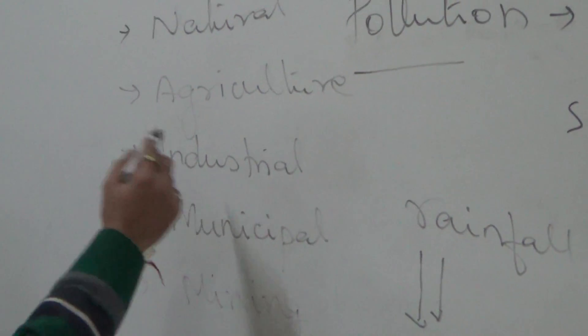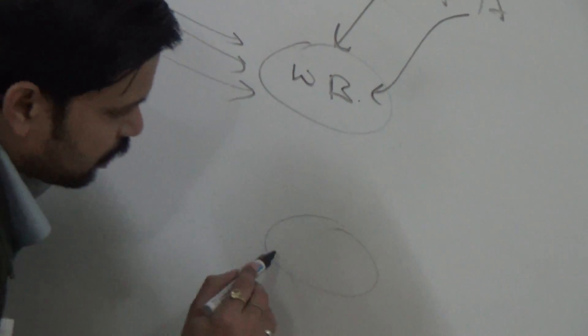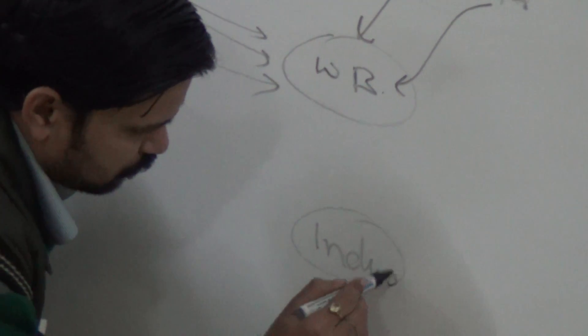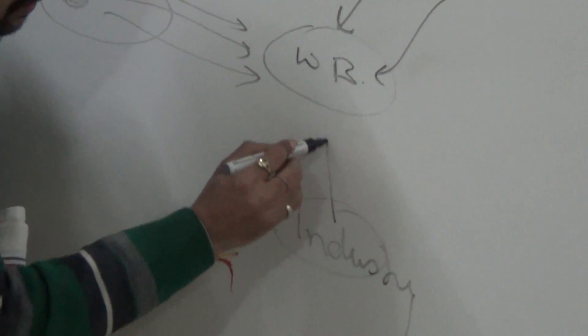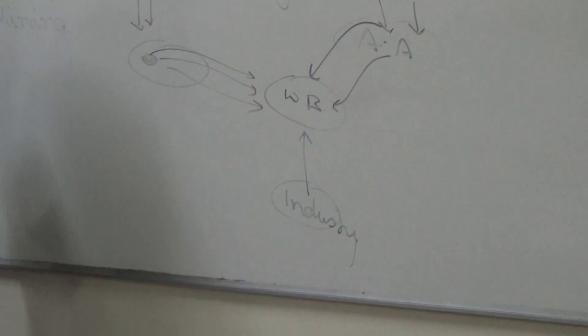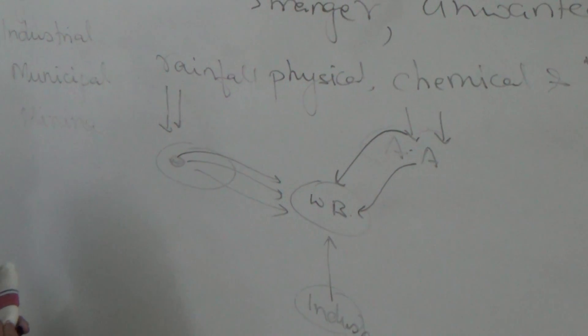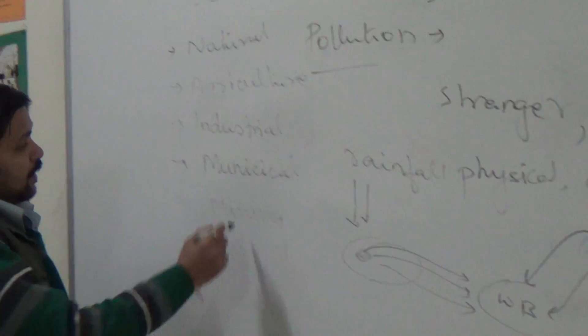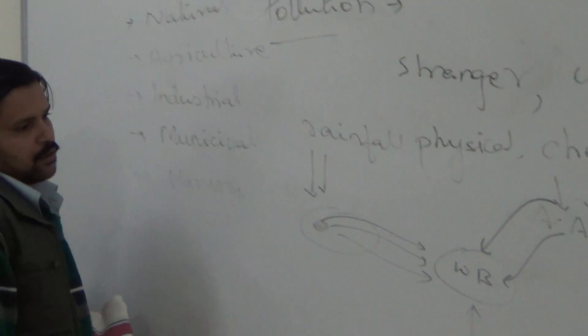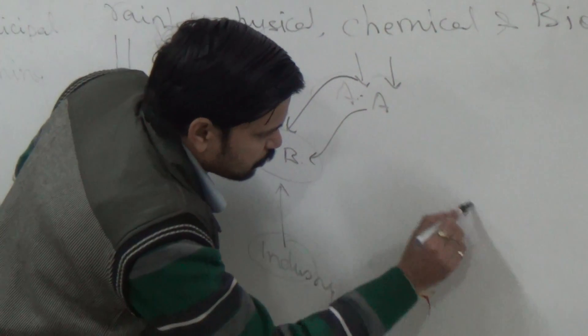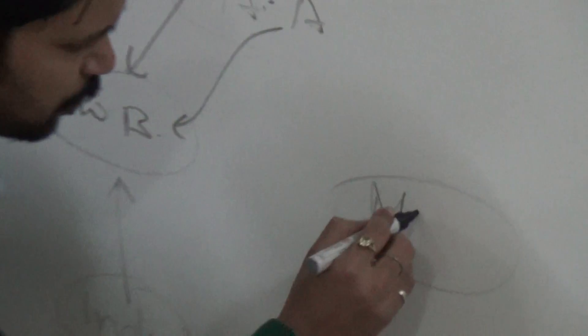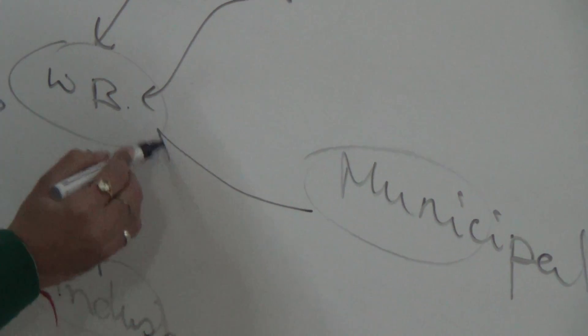The third source is industrial. Effluent discharged from industry without any proper treatment, when disposed into any water body, causes water pollution.